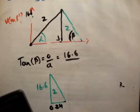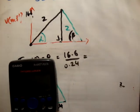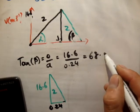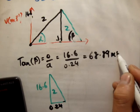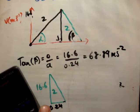Let's say 16.6 divided by the adjacent 0.24 equals what? So 16.6 divided by 0.24 gives a deceleration of 68.89 meters per second squared.